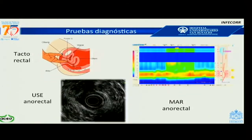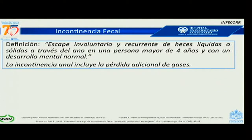Este es un estudio que quiere evaluar tres pruebas diagnósticas: el tacto rectal, la manometría anorectal de alta resolución y la ultrasonografía endoscópica anorectal en pacientes con incontinencia. Queremos evaluar la concordancia entre la tonicidad del tacto y la manometría en cuanto al esfínter anal, y la correlación entre las alteraciones estructurales y estas dos pruebas diagnósticas. La definición de incontinencia fecal para este estudio es el escape involuntario recurrente de heces líquidas o sólidas a través del ano en una persona mayor de cuatro años con desarrollo mental normal; también incluye pérdida adicional de gases.